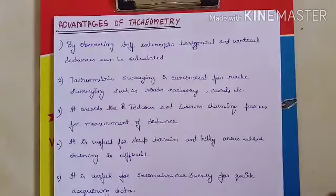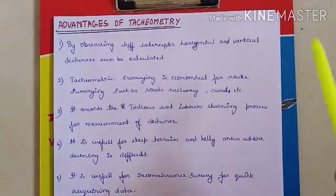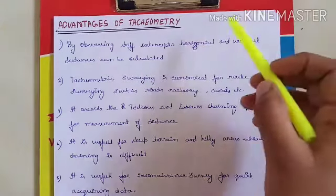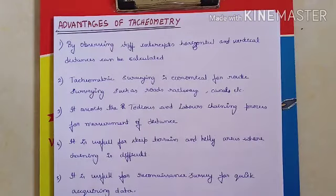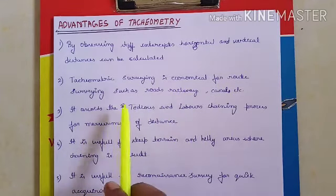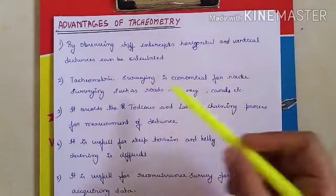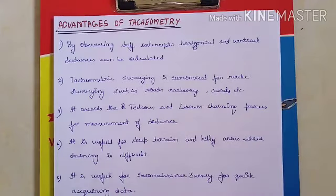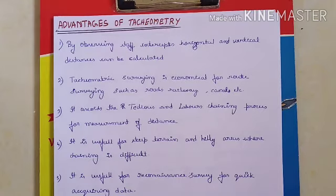The advantages of tachymetry: by observing the staff intercept, horizontal and vertical distances can be calculated. Tachymetry is economical for route surveying, such as roads, valleys, and canals. It avoids the tedious and laborious chaining process — with ordinary chaining you elaborate the chain, drag it to the next place, and continue — tachymetry avoids all of that.